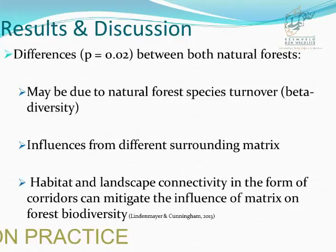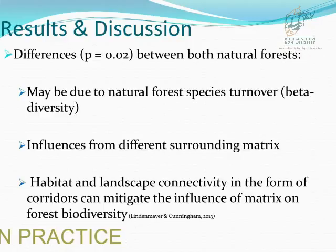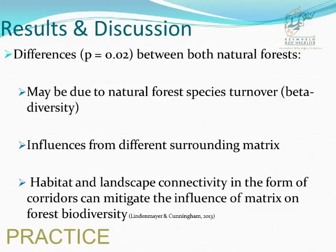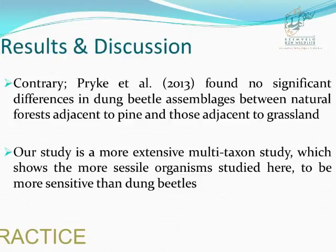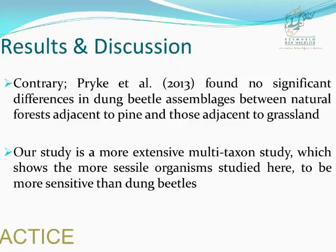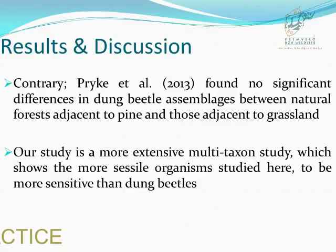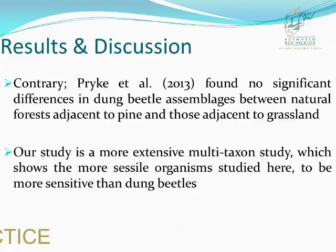However, PERMANOVA indicated significant differences between natural forest adjacent to pine plantation and natural forest adjacent to grassland, likely due to natural forest species turnover and influences from the matrix. We also suggest that habitat and landscape connectivity in the form of corridors can mitigate the influence of the matrix on forest biodiversity, given that natural forest arthropods have poor dispersal abilities. Our findings are contrary to those of my supervisors, who found no significant differences in dung beetle assemblages between natural forests adjacent to pine plantation and those adjacent to grassland. The difference is that the current study is a more extensive multi-taxon study, indicating that the arthropod groups we studied are more sensitive than dung beetles.